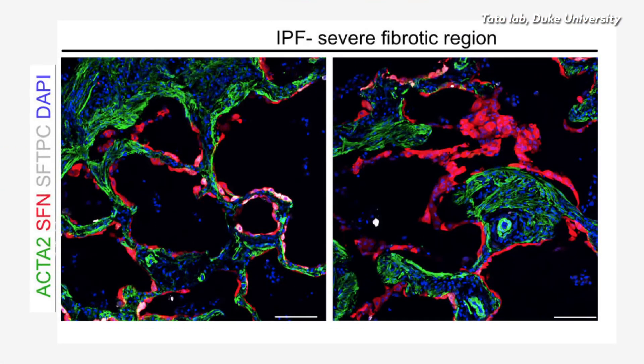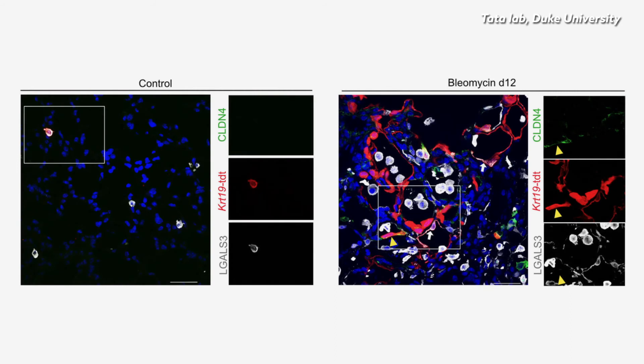Once the researchers knew what to look for, they found increasing numbers of transitional cells in scarred human lungs. This kind of damage can be seen when any number of harmful factors take hold of the lung, including toxins and infectious diseases like COVID-19.